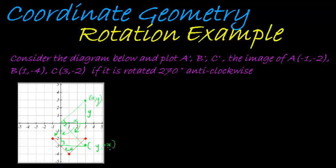So it becomes negative x, and there's my transformation rule. My transformation rule is T(x,y) rotated 90 degrees clockwise or 270 anti-clockwise becomes (y, -x). So now we can apply it to our graph.